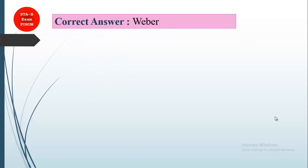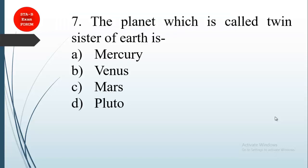Coming to question number seven: the planet which is called twin sister of Earth. This is very interesting. Most of us know that Venus is called the twin sister of Earth.